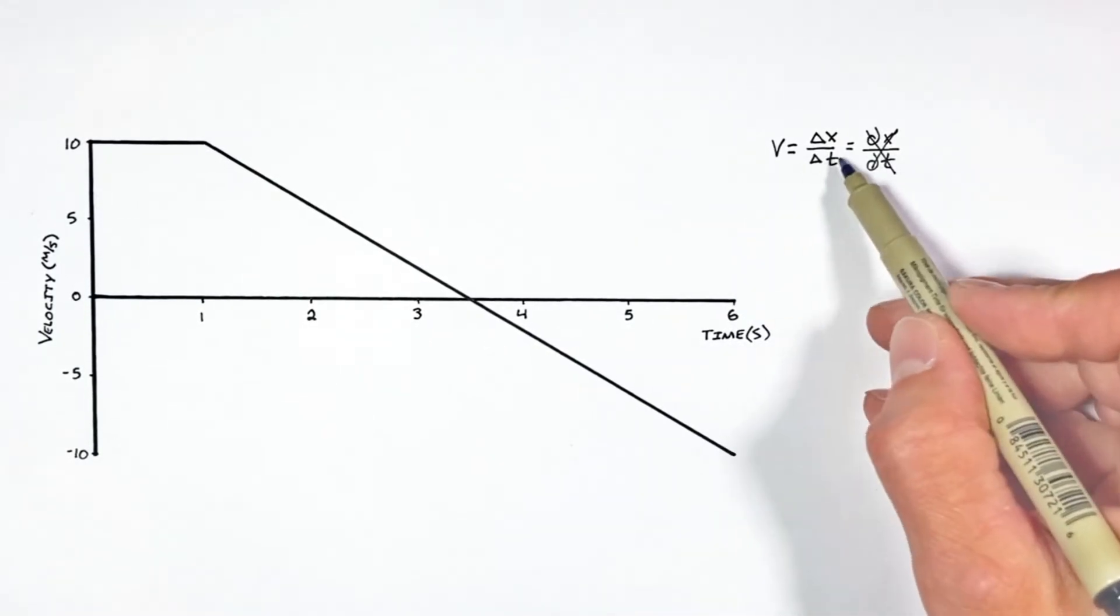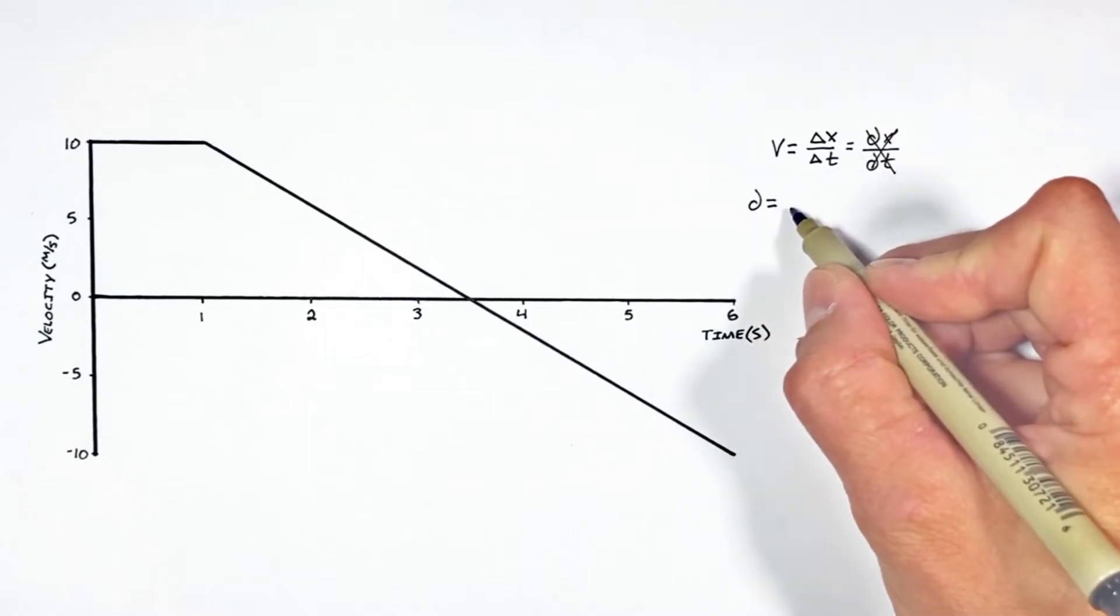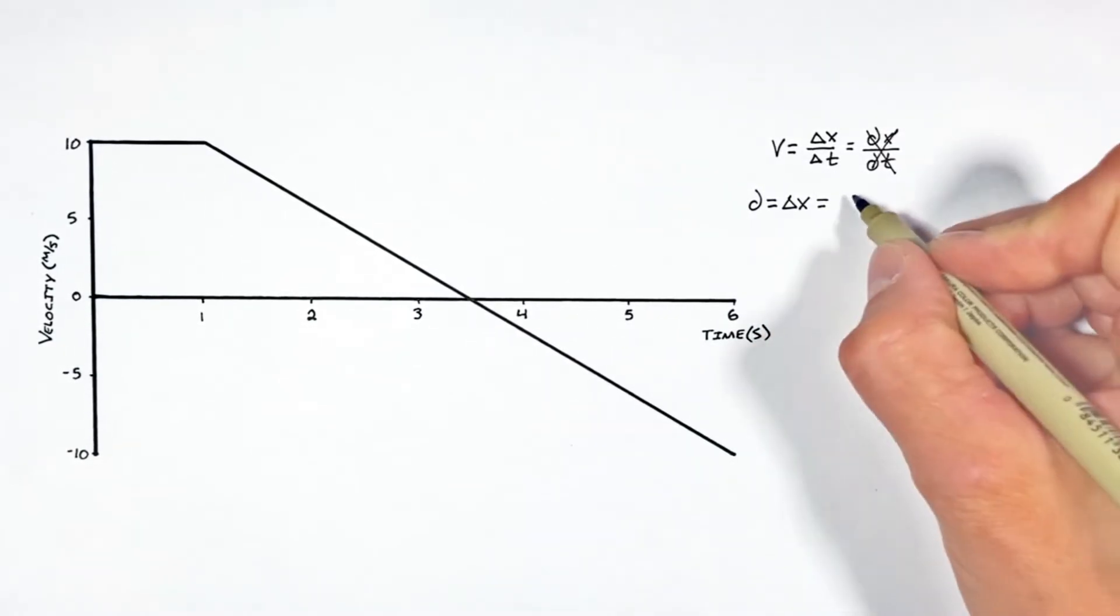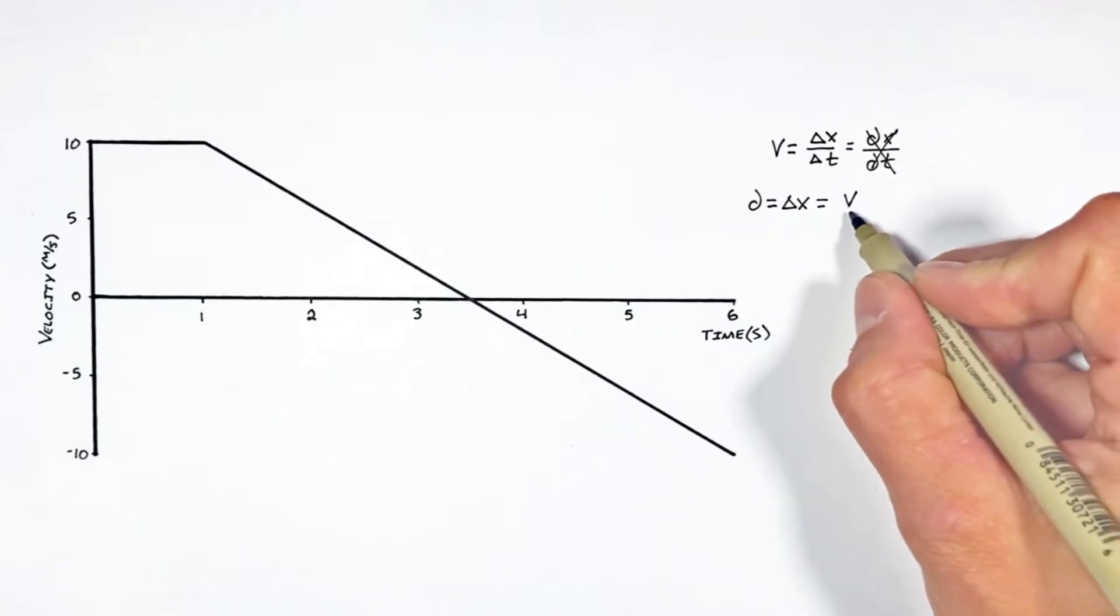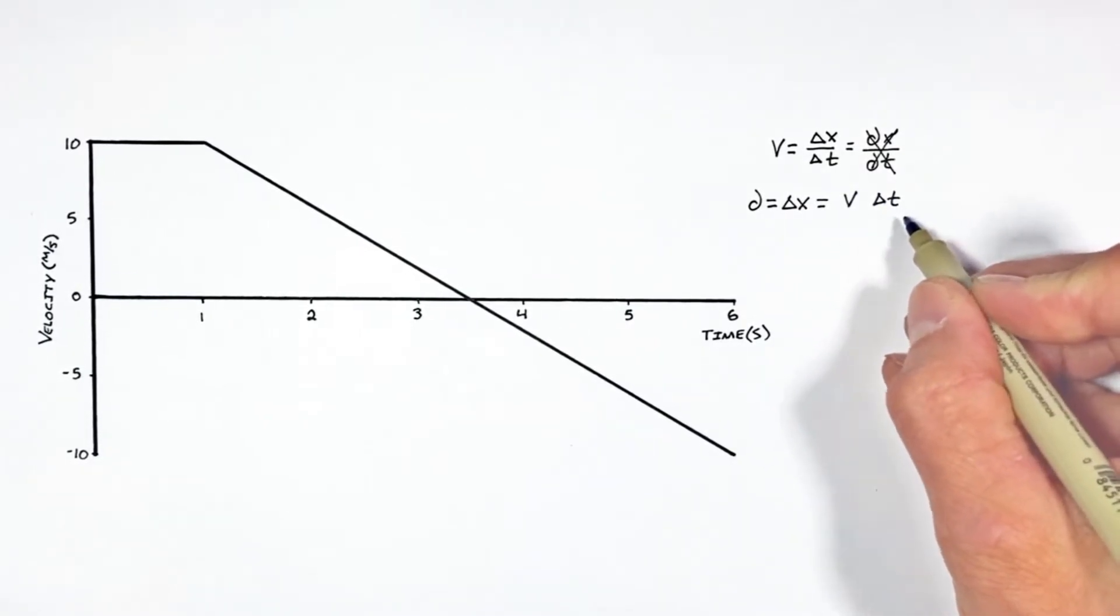But if we take this equation and rearrange it for this change in position, another word for change in position is displacement. In rearranging this equation, we come up with velocity multiplied by a change in time or an elapsed time.